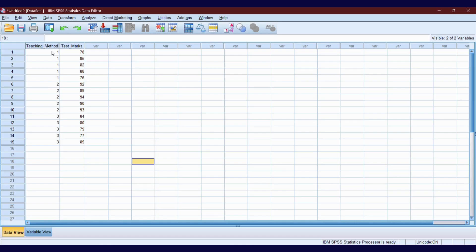In here I put 1 for teaching method A, 2 for teaching method B, and 3 for teaching method C. Now let's do the analysis.